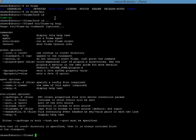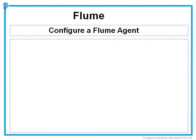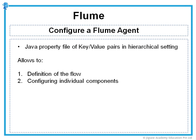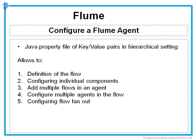We are now ready to set up, configure and subsequently run a Flume agent. But first, let us go over how to configure a Flume agent. We configure the details of a Flume agent using a simple Java property file consisting of key-value pairs in a hierarchical setting. The configuration file enables you to specify the definition of the flow, configure individual components such as source, channel and sink, add multiple flows in an agent, configure multiple agents in the flow, and configure flow fanout — which is basically configuring multiple channels for the sources to deliver events to. At a minimum, specifying the flow definition and configuring individual components are mandatory.